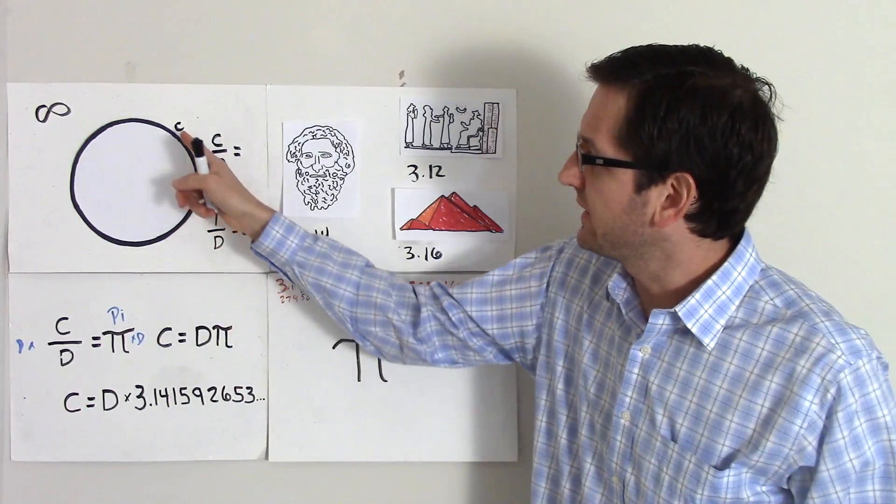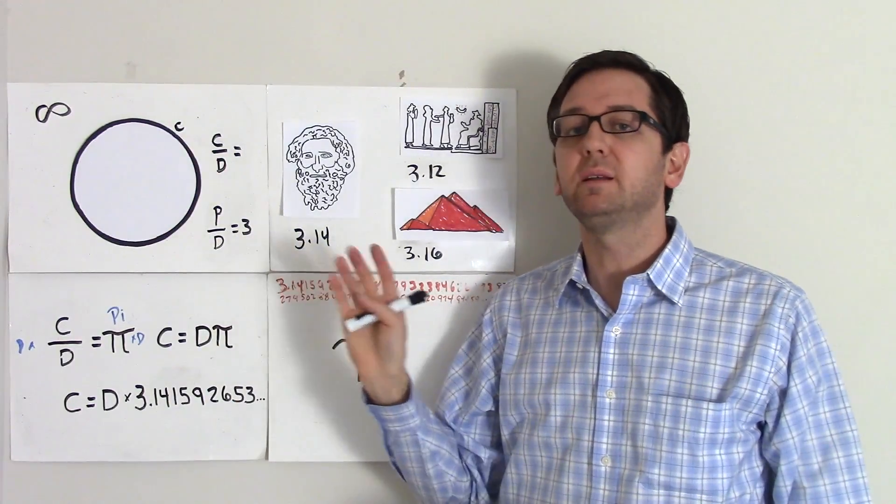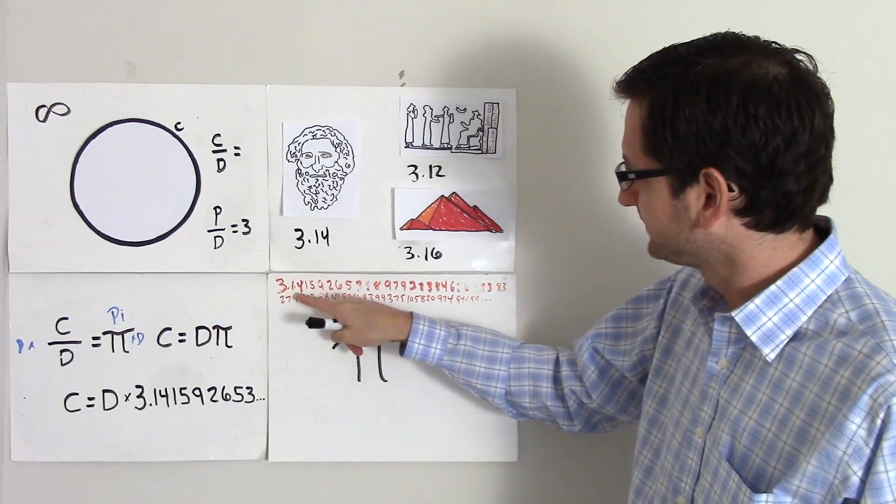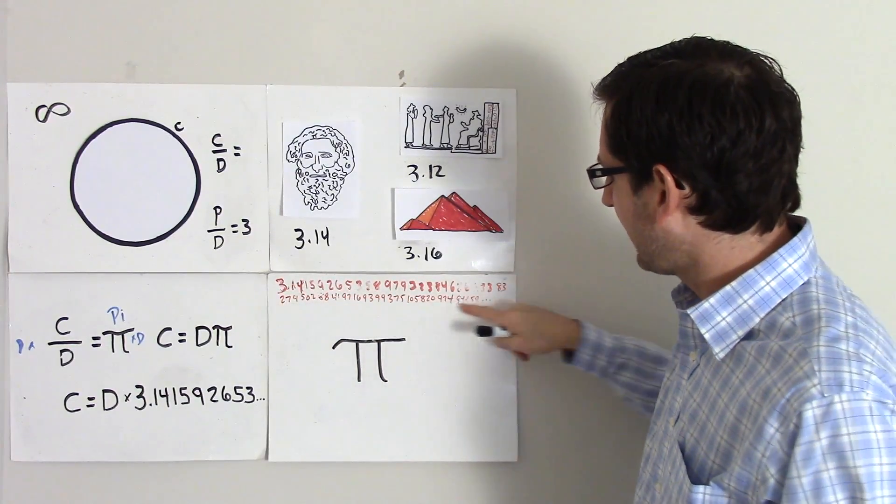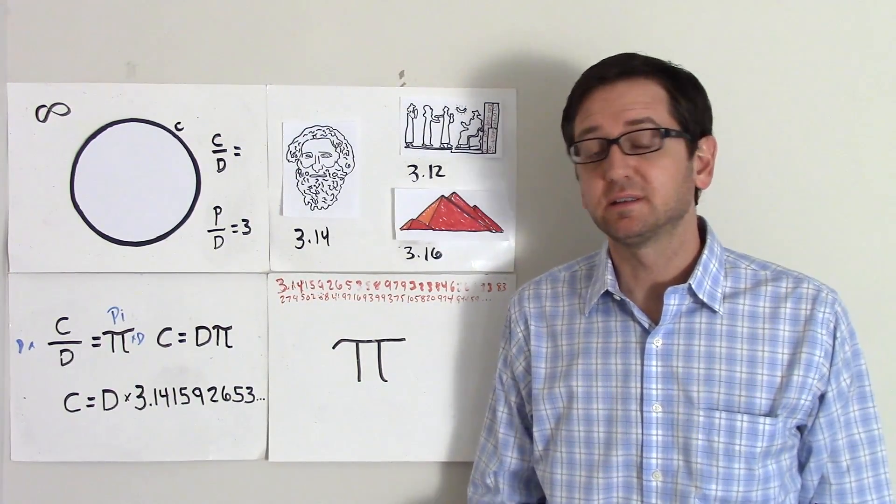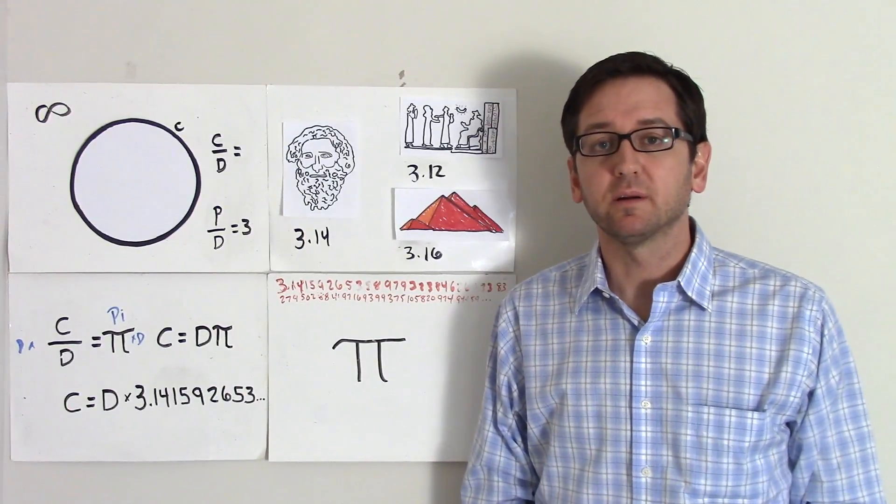And now we have computers where you can plug in, I want you to show me a regular polygon with a million sides, and that's how we can have Pi out to so many digits, an infinite number of digits.